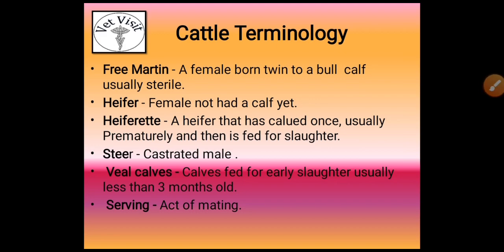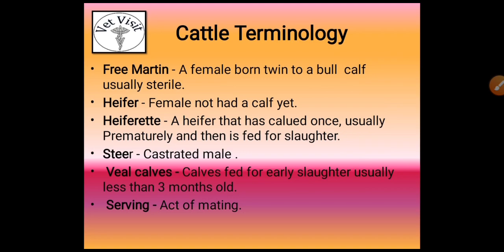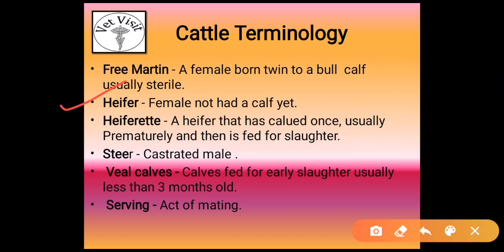Freemartin: a female born twin to a bull calf, usually sterile. When twins are born, one male and one female, the female will become sterile — this is known as freemartin. Heifer: a female that has not had a calf yet. Hifret: a heifer that has calved once, usually prematurely, and then is fed for slaughter. Steer: a castrated male. Veal calves: a cow's calf fed for early slaughter, usually less than three months old.